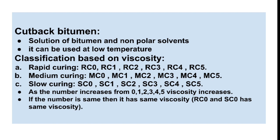Rapid curing, medium curing, and slow curing are the classifications of cutback bitumen. We classify cutback bitumen on a scale from 0 to 5 — as the number increases from 0 to 5, viscosity of the cutback increases. If the number is the same, viscosity is the same. For example, RC0 and SC0 have the same viscosity. If we compare RC0 and SC2, then SC2 has more viscosity than RC0. As viscosity increases, fluidity of the cutback decreases.